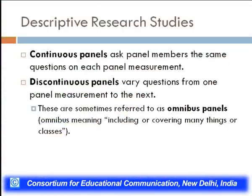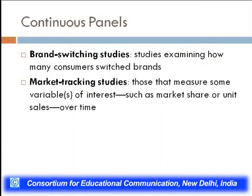Descriptive research studies also include continuous panels and discontinuous panels. In continuous panels, panel members are asked the same questions on each panel measurement. In discontinuous panels, the questions vary from one panel measurement to another — these are sometimes referred to as omnibus panels, meaning including or covering many things or classes. Continuous panels include brand switching studies — examining how many customers switch brands — and market tracking studies, which measure variables of interest such as market share or unit sales over time.